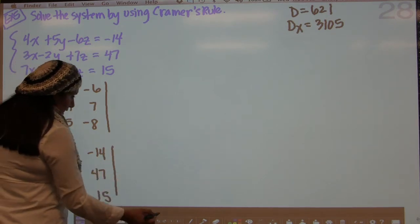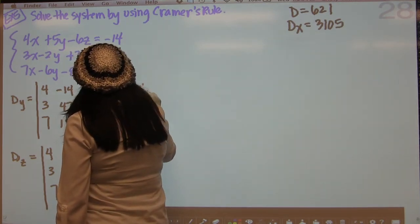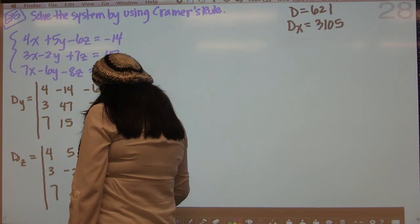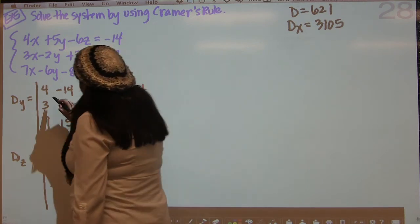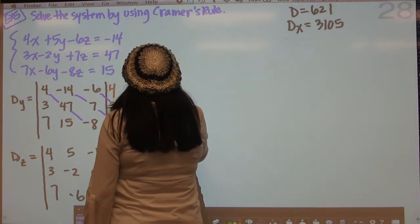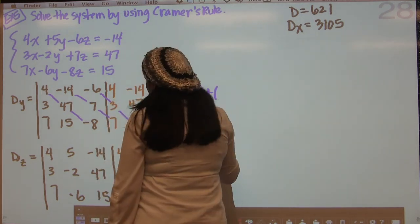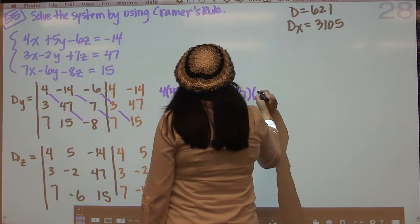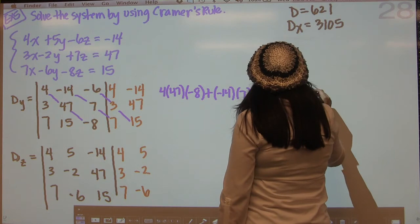And then we just do it all over again. I'll try to do that as quickly as I can without compromising your understanding. I'm rewriting the first two columns for each matrix and then we're going to do our diagonals. We're going to get 4 times 47 times negative 8, then negative 14 times 7 times 7, and then negative 6 times 3 times 15.